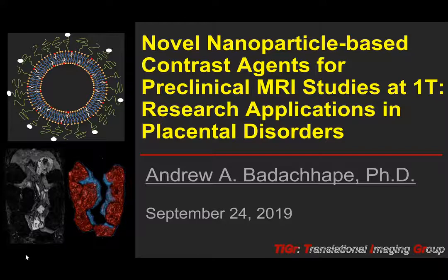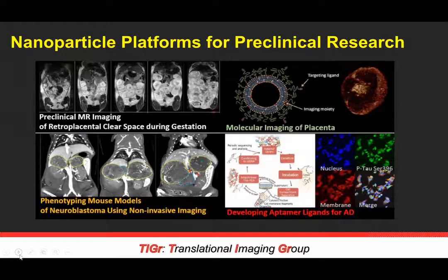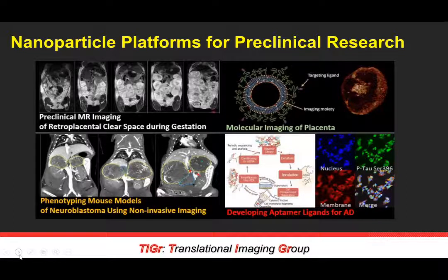I am a member of the Translational Imaging Group, or TIGER, at Texas Children's Hospital and Baylor College of Medicine. In addition to using different novel contrast mechanisms, we're also deeply interested in translating preclinical imaging research into actual clinical practice to improve patient outcomes. Today I'm focusing mostly on our novel nanoparticle platform for research applications including cancer imaging and Alzheimer's imaging.